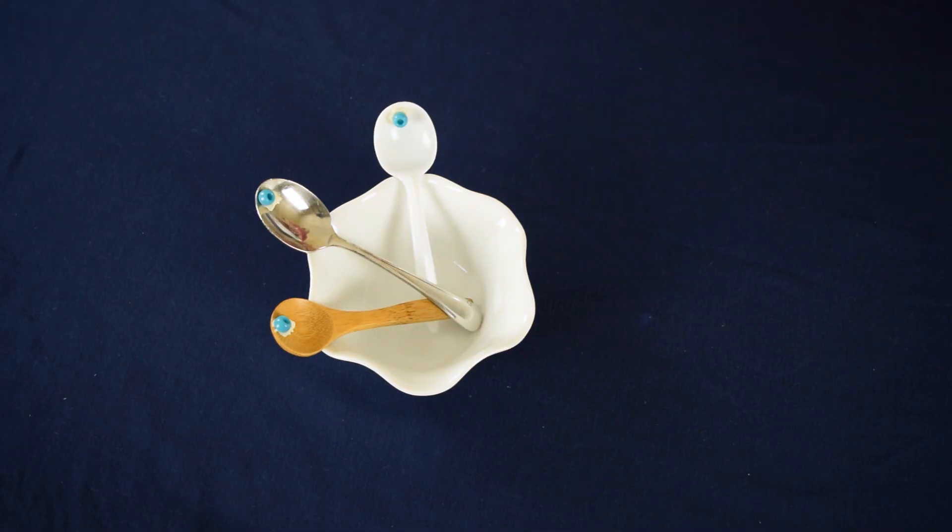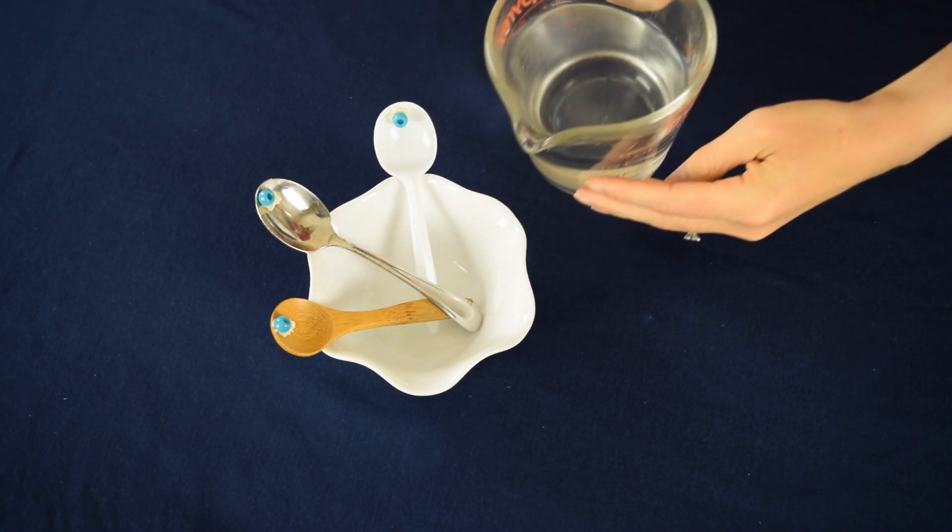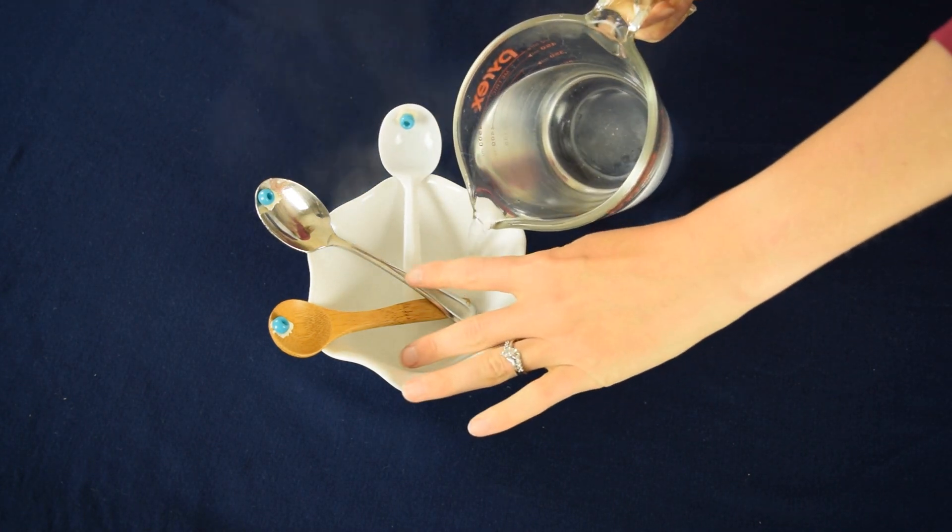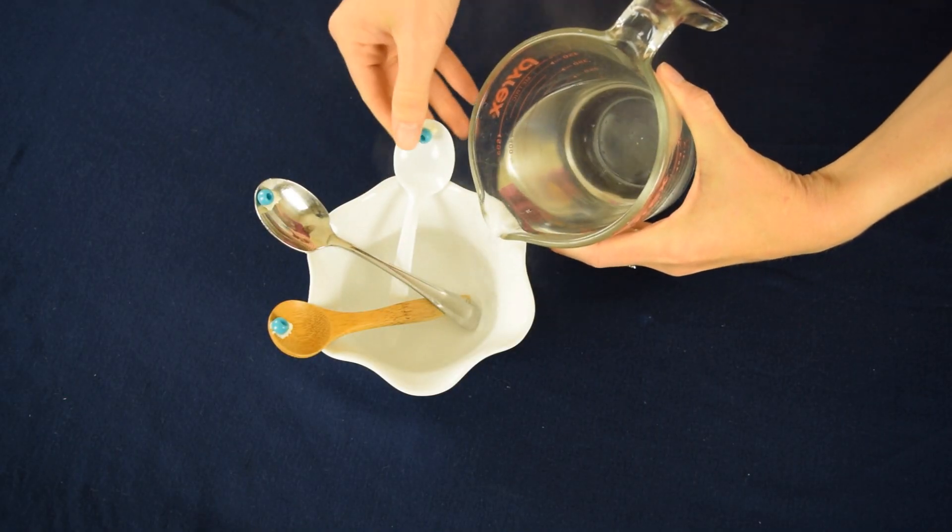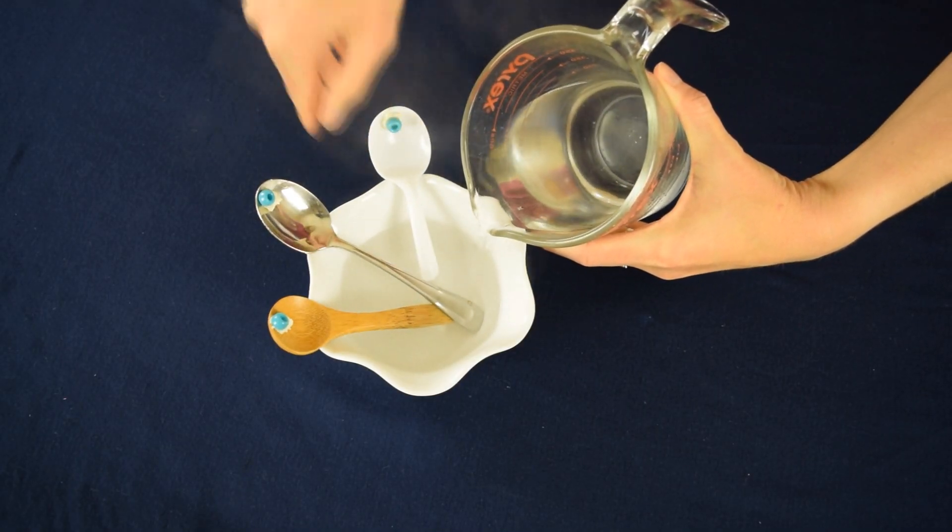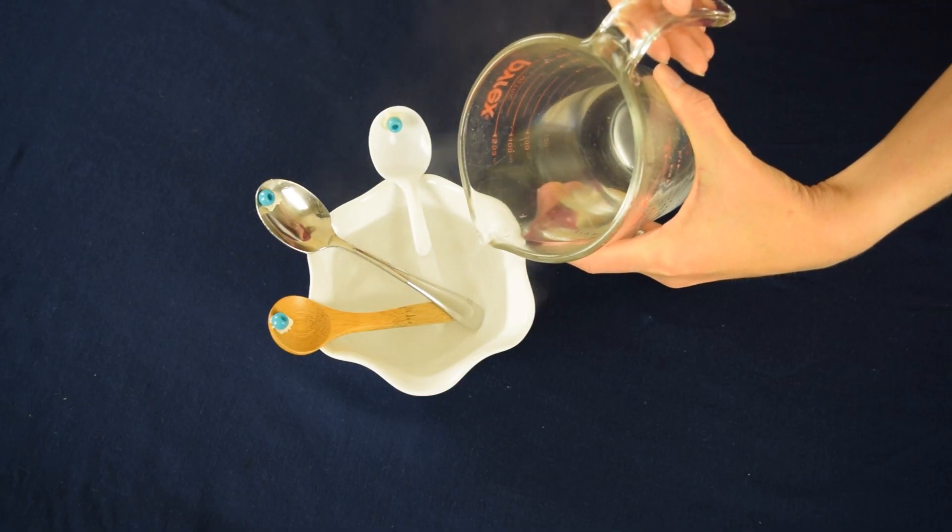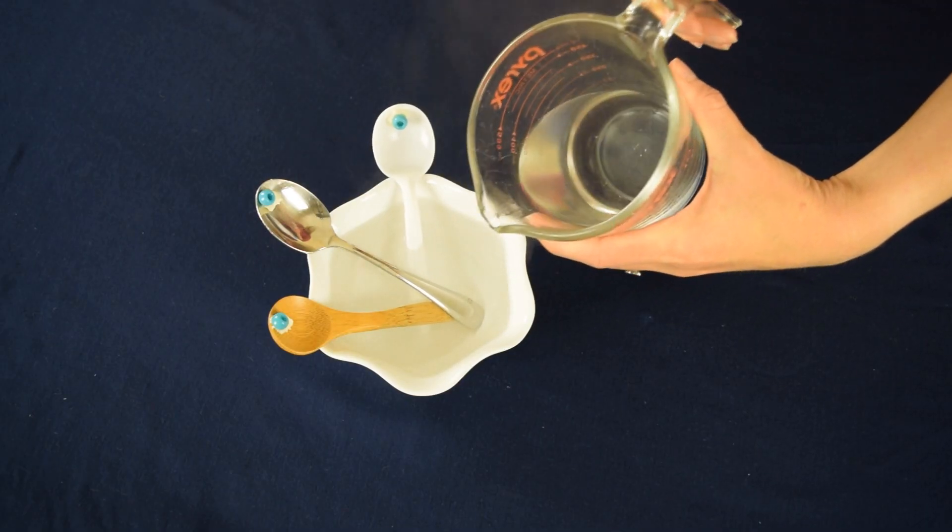For the next step, you're going to take some hot and just boiling water, and you're going to slowly pour it into the bowl. You want to make sure that the spoons do not fall into the water. Once you have the water in the bowl, we're going to wait and watch to see what happens.